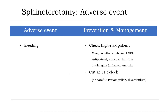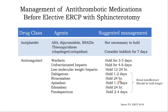How to avoid adverse events? The most common adverse event is post-procedure bleeding. You need to check especially for high-risk bleeding patients: cirrhotic patients, chronic liver failure, coagulopathy, and patients on antiplatelet or anticoagulant therapy — you need to be prepared. Be careful in case of acute cholangitis because of inflammation of the ampulla. Cut in the correct direction at 11 o'clock, and be especially careful in case of a periampullary diverticulum. This slide shows how to prepare patients on antiplatelet or anticoagulant agents, as proposed by Todd Baron in the ERCP book 2018.